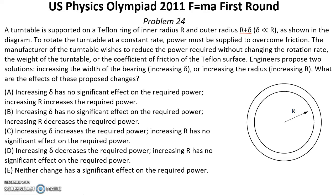Problem number 24. Solution for this problem you can find below this video in the description reference. A turn table is supported on a teflon ring of inner radius R and outer radius R plus delta, delta much less than R, as shown in the diagram. To rotate the turn table at a constant rate power must be supplied to overcome friction. The manufacturer of the turn table wishes to reduce the power required without changing the rotation rate, the weight of the turn table or the coefficient of friction of the teflon surface. Engineers propose two solutions: increasing the width of the bearing increasing delta or increasing the radius increasing R. What are the effects of these proposed changes?